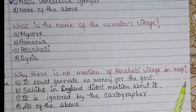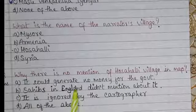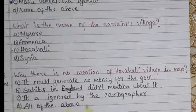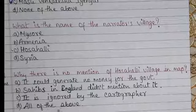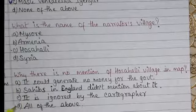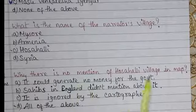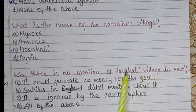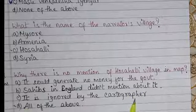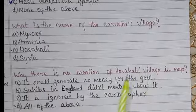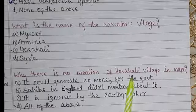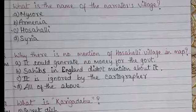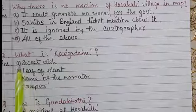Question number three: Why is there no mention of Hosahalli village on the map? Option A: It could generate no money for the government, Option B: Sahibs in England didn't mention it, Option C: It is ignored by the cartographer, Option D: All of the above. The answer is Option D — all of the above — because all three reasons are true: Hosahalli generated no money, wasn't mentioned by English writers, and was ignored by map-makers as it was small and insignificant.